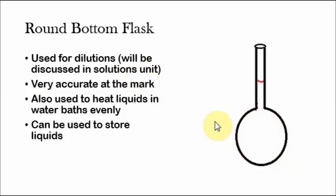they have different measurements. You might have a 50 milliliter or a 100 milliliter round bottom flask, but whenever you measure the liquid that you want all the way up to this red mark here, usually the volume is very very accurate. So you would use a round bottom flask to measure out some amount of a liquid, not a beaker. They're also used to heat liquids in water baths evenly because they have that round bottom, and they can also sometimes be used to store liquids.